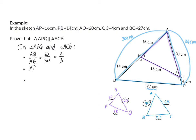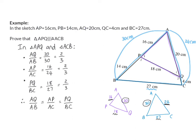Side AP over side AC is 16 over 24, which also simplifies to 2 over 3. Then PQ over BC is 18 over 27, which also simplifies to 2 over 3. For none of these do I need a reason because all these distances were given to us. Now we can conclude that all these ratios are exactly the same.